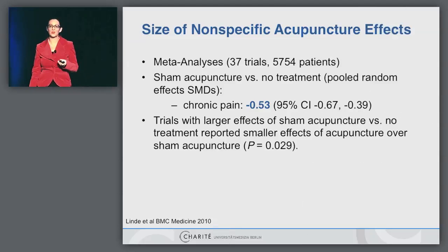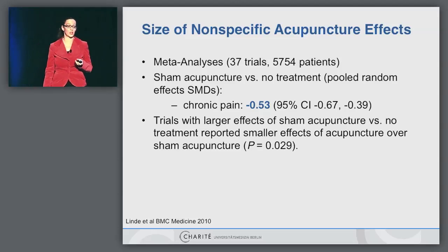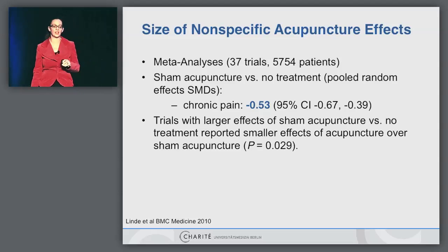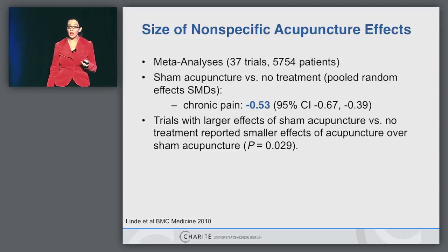We have also seen that non-specific effects play a role, because we only have a moderate effect when comparing against an active control where non-specific effects are typically larger. A meta-analysis by Klaus Linde compared sham acupuncture versus no acupuncture treatment — often a waiting list control — in a subset of chronic pain trials. The difference between sham acupuncture and no treatment is of moderate effect size. Interestingly, trials with larger sham versus no-treatment effects show smaller effects of acupuncture over sham, which is very plausible.